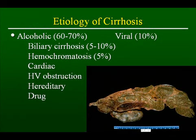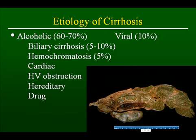Most TIPS shunts are done in people with cirrhosis. In the United States, the vast majority of people with cirrhosis acquire the disease from either an alcoholic or viral etiology. Biliary cirrhosis and hemochromatosis make up a smaller minority, and then there's a host of other things that can cause that. Worldwide, however, viral causes take a more preeminent position.